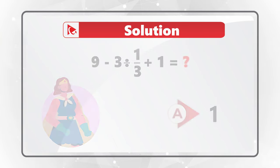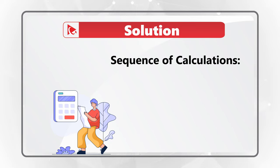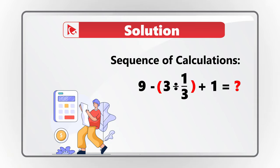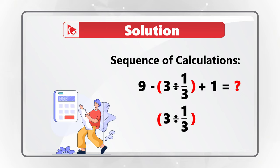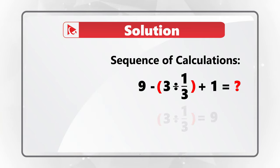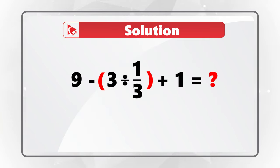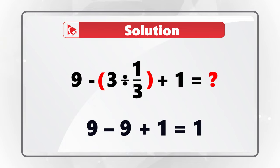But why? If you look at the expression closely, the first part to be calculated is the division — dividing 3 by one-third. I put this expression in red parentheses to emphasize this. When you calculate 3 divided by one-third, you get a result of 9. Then you do sequentially subtraction and then addition: 9 minus 9 equals 0, plus 1 equals 1. This is why the correct choice is choice A, 1.